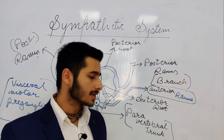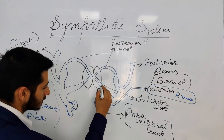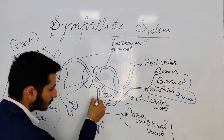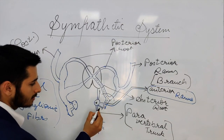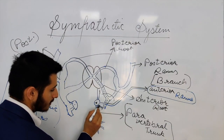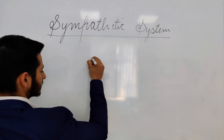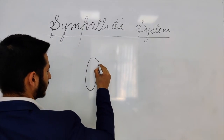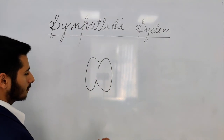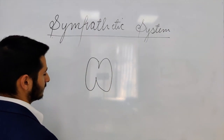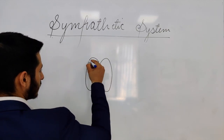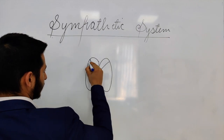We're going to discuss how these fibers travel from the anterior ramus to the paravertebral trunk. This is a spinal cord segment — it can be any segment: T1, T2, T3, T4, T5, T6, T7, T8, T9, T10, T11, or T12. This is the posterior route right here.